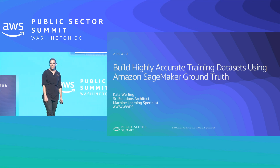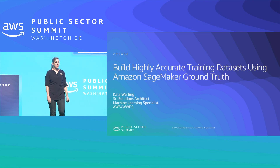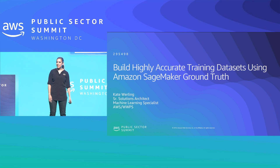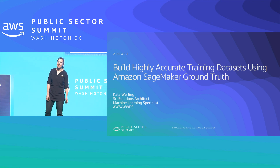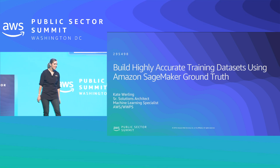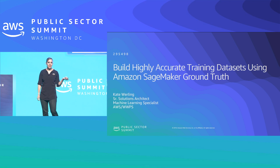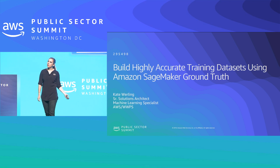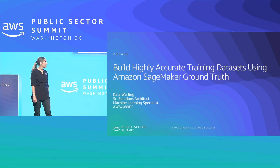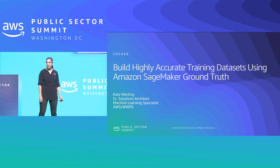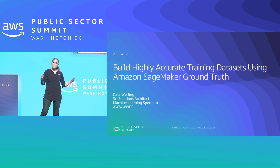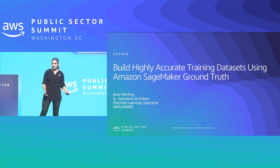My name is Kate Worling. I am a solutions architect and machine learning specialist at Amazon Web Services. Today I'm going to talk about Amazon SageMaker Ground Truth, which is a newer service launched at re:Invent 2018. We're going to get really deep into how we can leverage Ground Truth to accelerate the building of machine learning datasets.